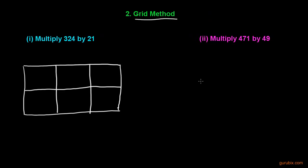Let us move to the second method: the grid method. We shall learn this by 2 examples. In example 1, we have to multiply 324 by 21. We shall write 324 in expanded form: 300 plus 20 plus 4. We shall also write 21 in expanded form: 20 plus 1.